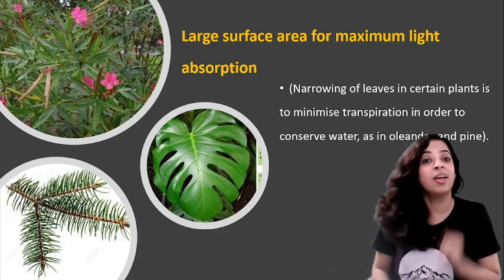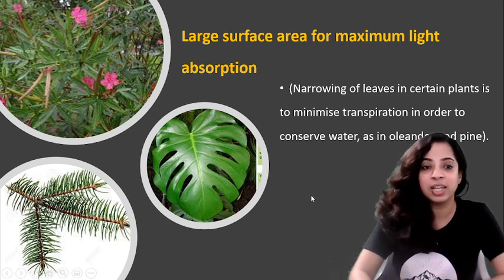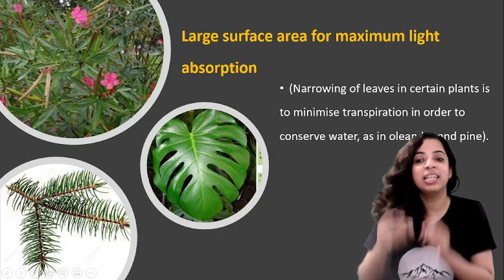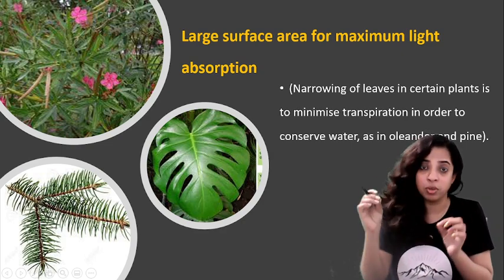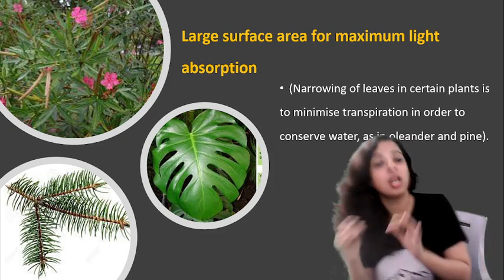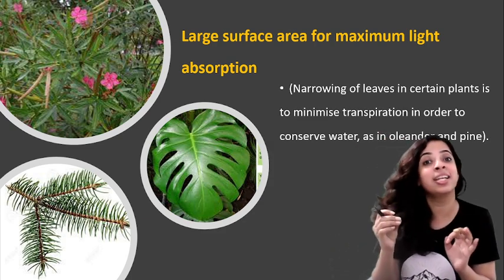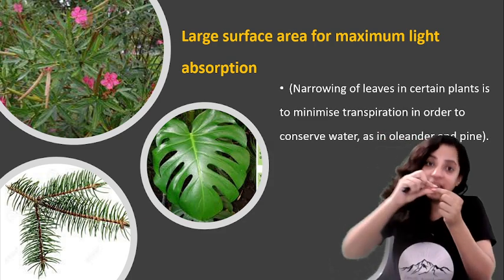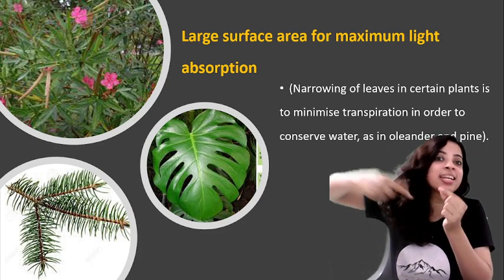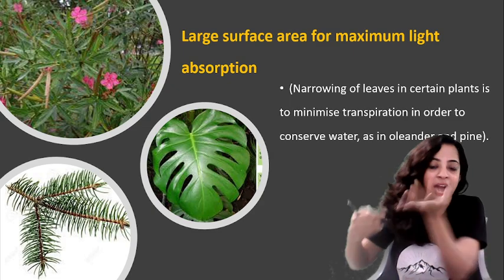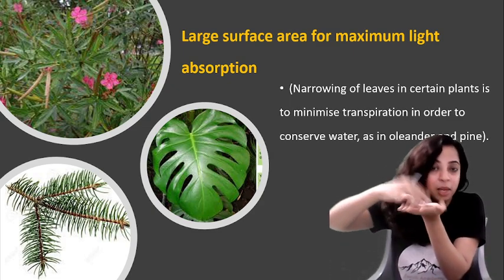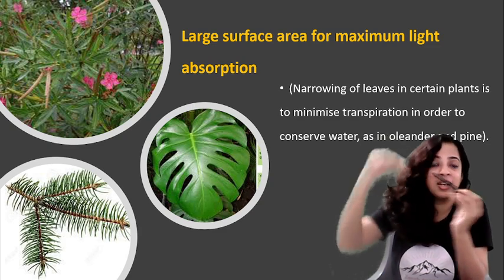Now in many leaves, like you can see here this diagram of oleander and pine, the leaves narrow down so that they can reduce transpiration. But this feature also helps in increasing the surface area. If the leaf is narrow, around the whole leaf the surface area increases. Had it been like this, only this area would get the light. But now it has become very thin, narrow leaves, so all around the leaf the surface is increased.